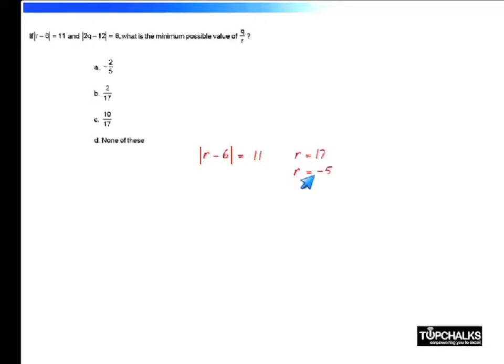Similarly, if you consider |2q - 12| = 8, for this to happen 2q - 12 must be either +8, which gives q = 10, or -8, which gives q = 2. We want to minimize the value of q/r.